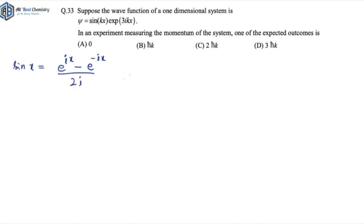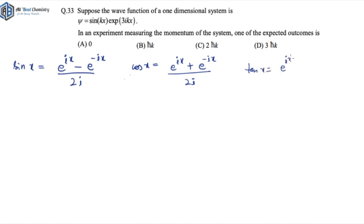Similarly, cos(x) equals e^(ix) plus e^(−ix), divided by 2i. And for tan(x), you can derive it as: tan(x) equals [e^(ix) − e^(−ix)] divided by [e^(ix) + e^(−ix)]. These are the conversion formulas that let you convert trigonometric functions into exponential form.